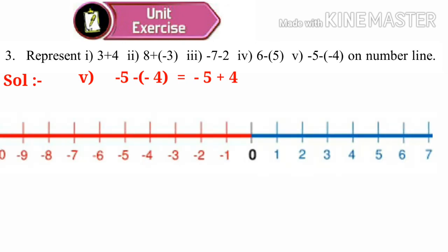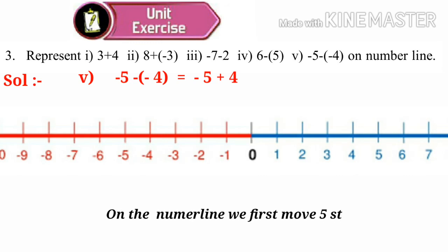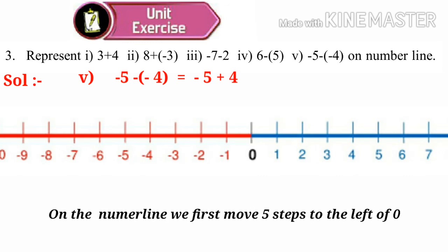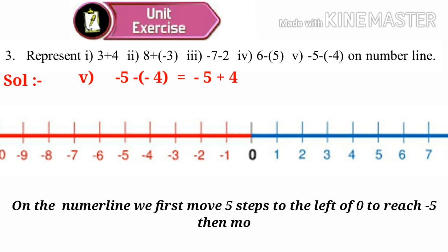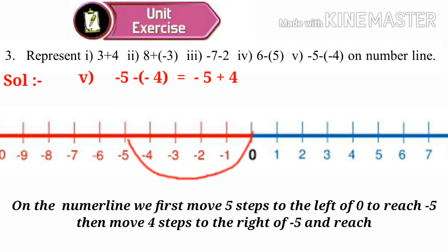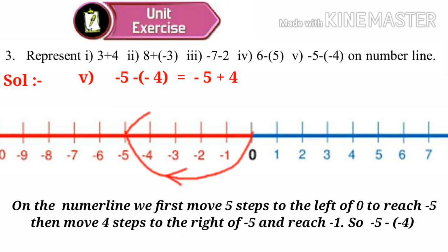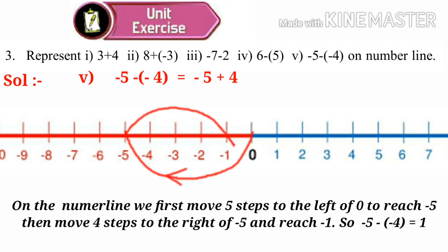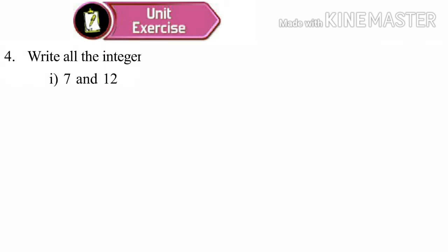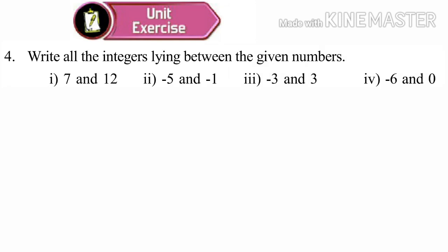Take the number line. On the number line, we first move 5 steps to the left of 0 to reach minus 5, then move 4 steps to the right of minus 5 and reach minus 1. So minus 5 minus (minus 4) is equal to minus 1.